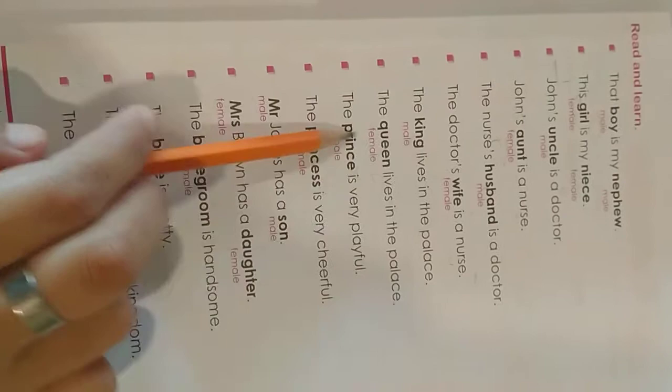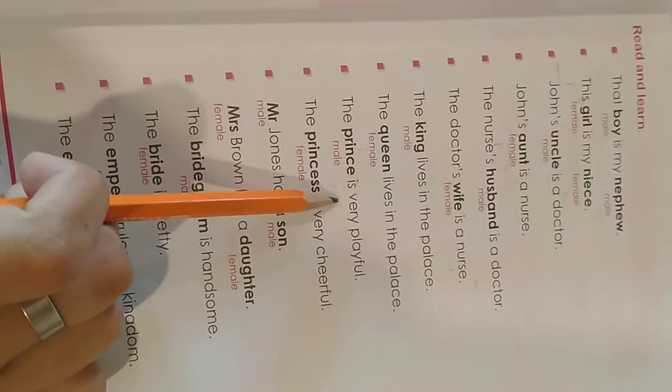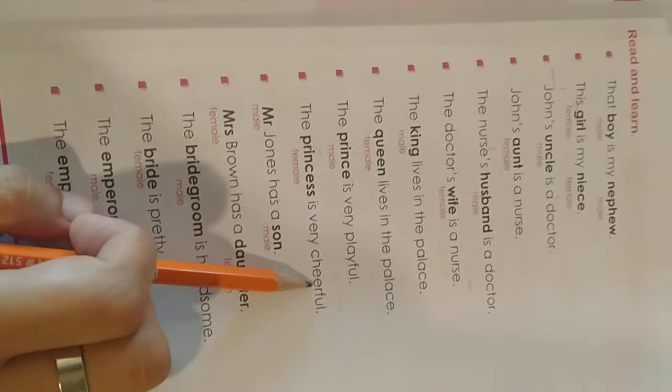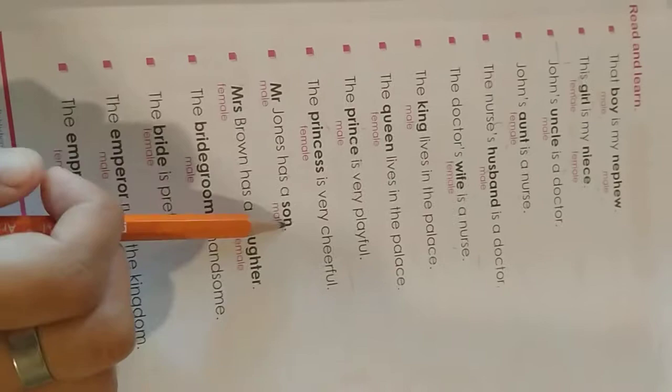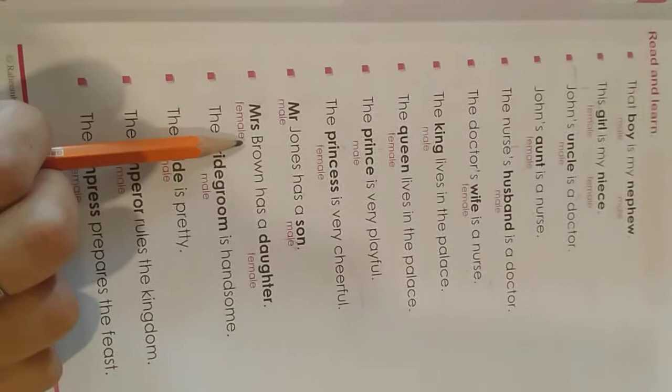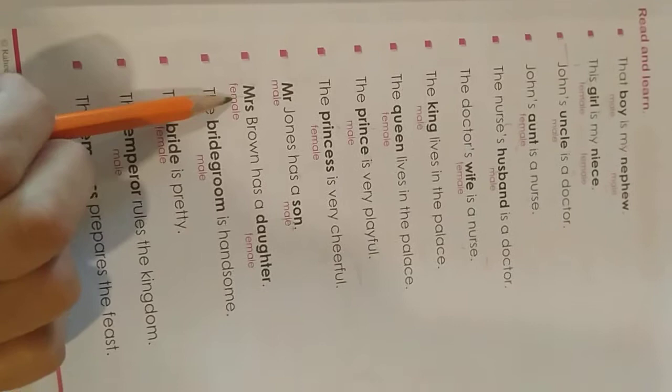The prince is very playful — prince is male. The princess is very cheerful — princess is female. Mr. Jones has a son. Mister is used for a male, and son is also male. Mrs. Brown has a daughter. Mrs. is used for females, and daughter is also female.